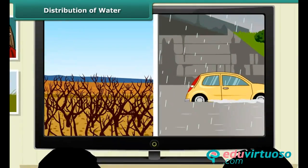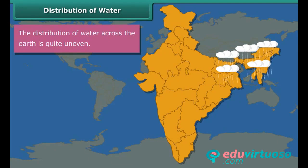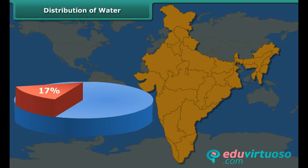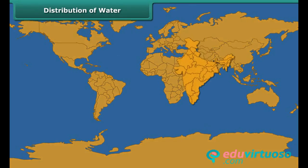Floods are reported in one part of the world while another part experiences severe drought. This strange coexistence is due to the uneven distribution of water across countries. Even within a country, water resources are unequally distributed. While some regions are deserts with scanty rainfall, others are humid with bountiful rainfall. India has 17% of the world's population but only 4% of the world's fresh water resources, resulting in acute water shortage likely to worsen with growing population.